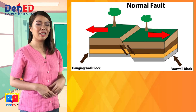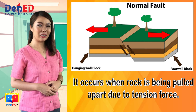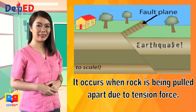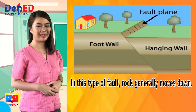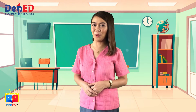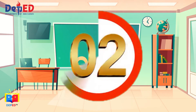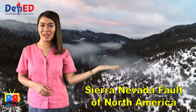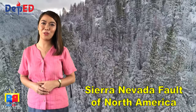Let us start with the normal fault. Normal fault occurs when rock is being pulled apart due to tension force. In this type of fault, rock generally moves down. Sherebada fault of North America is an example of normal fault.